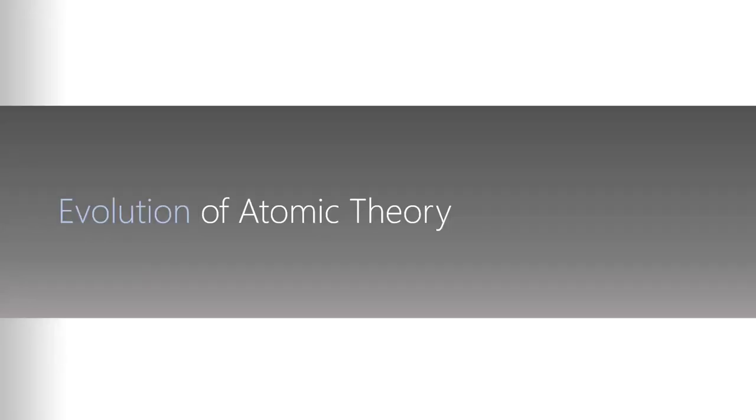At the end of Dalton's theory, you've got a picture of the atom as a little ball, different masses for different elements and different properties for different elements, but no substructure. It's just a ball. If you looked at a gold atom, it would be a gold atom ball, and if you look at an oxygen atom, it would be an oxygen atom ball.